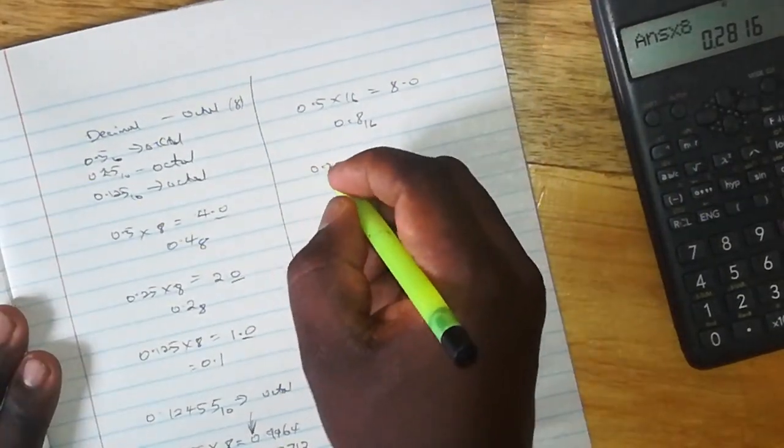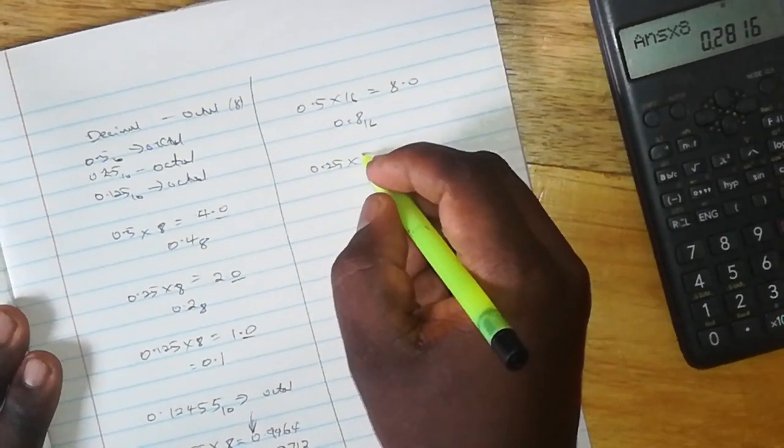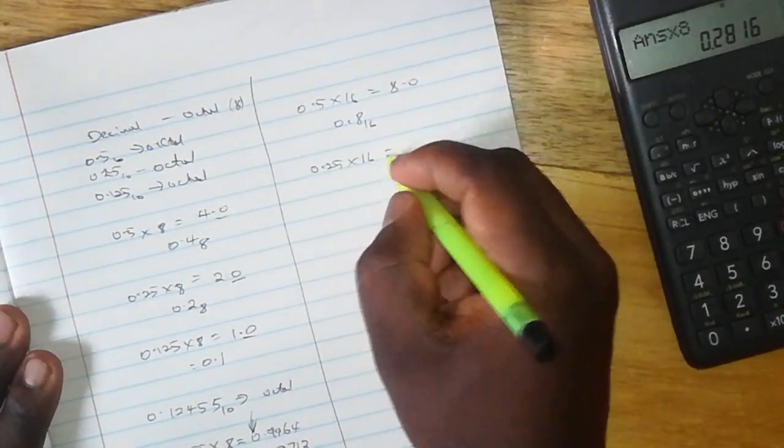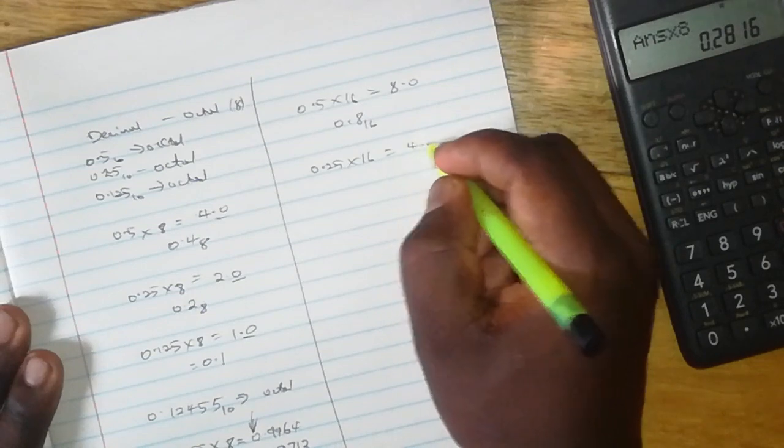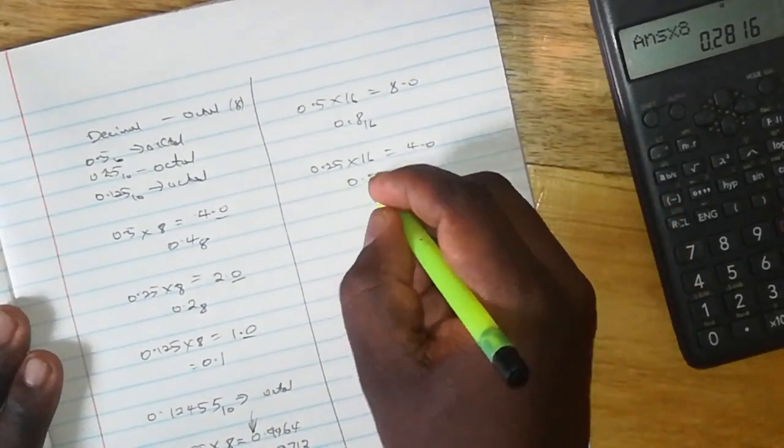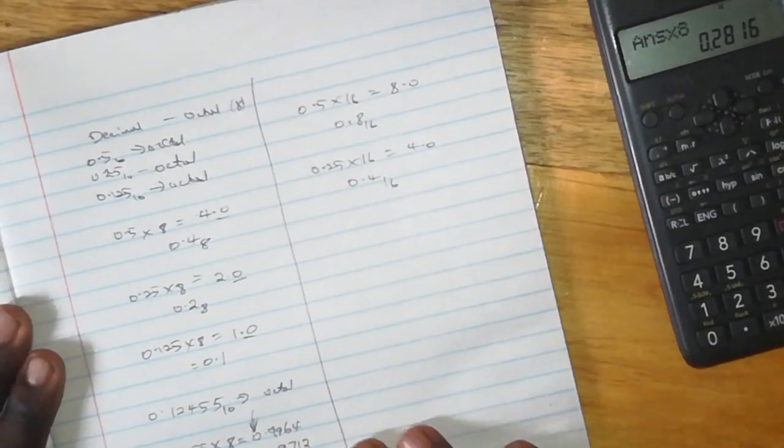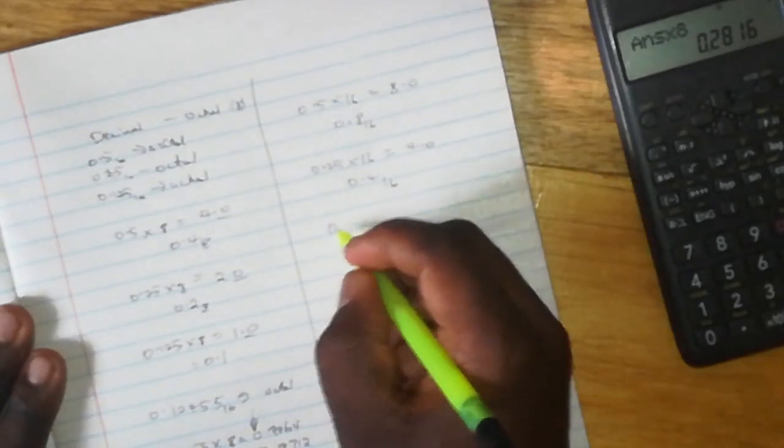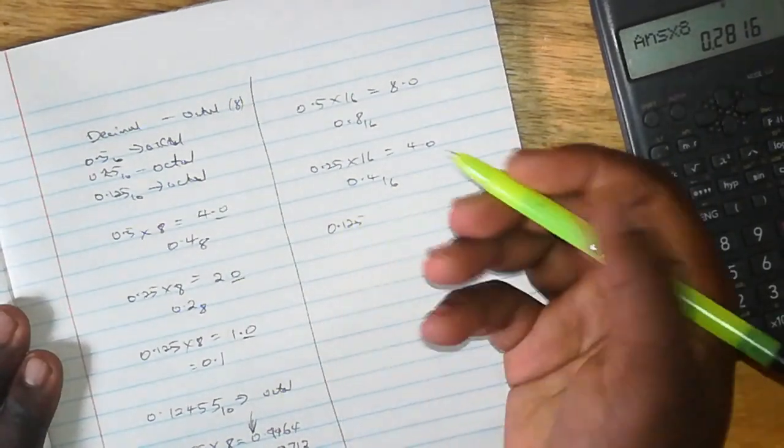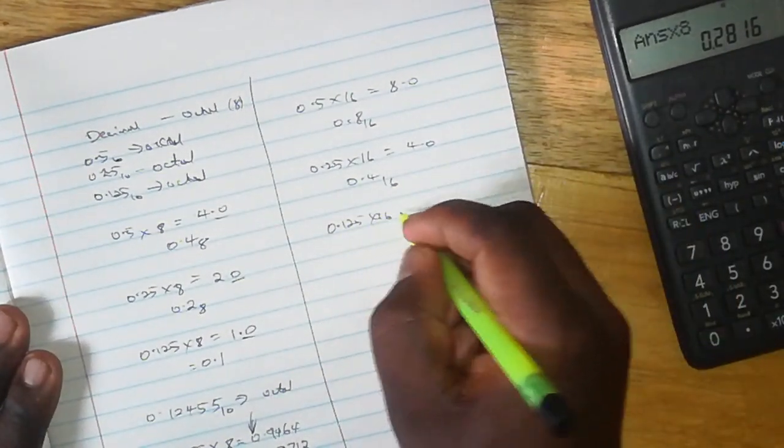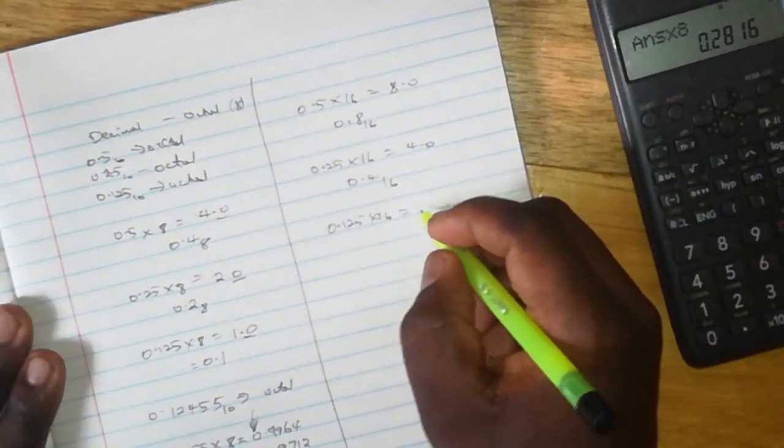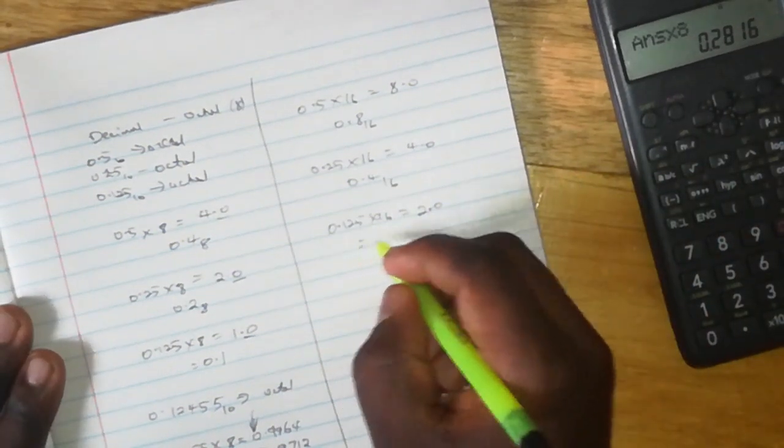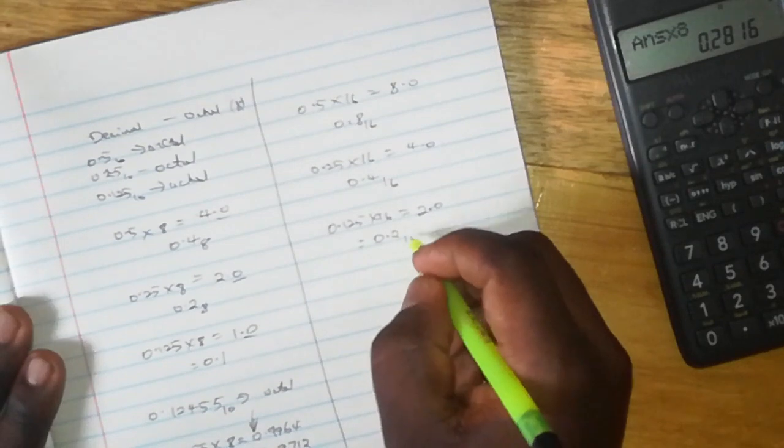So you have 0.25 converting it to hexadecimal. You multiply by 16, which you get 4.0, and your answer is 0.4 base 16. 0.125 by 16 will give you 2.0, and therefore your answer is 0.2 base 16.